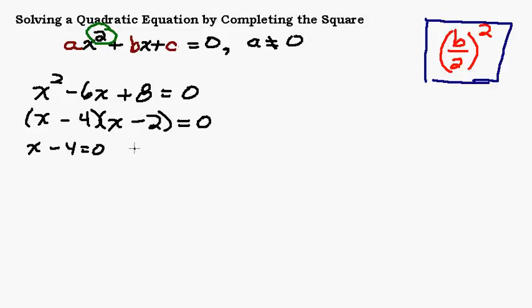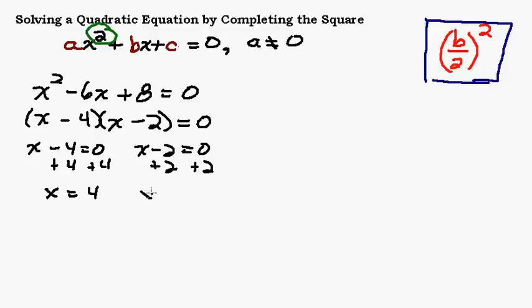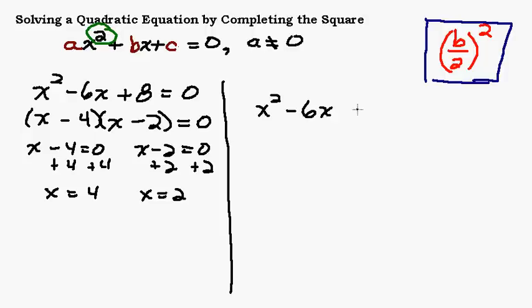Then you set each factor equal to 0 and solve. So we'll add 4 to both sides, add 2 to both sides, and we end up with x equals 4 or x equals 2. So we know that's the answer. Let's go ahead and do this exact same problem by completing the square just so you can see that it does come out to be the same, although this is a little bit of a longer way.